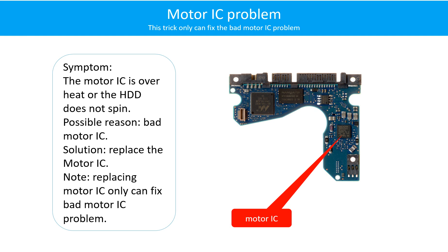Motor IC problem. Symptom: the motor IC is overheating or the hard drive does not spin. Possible reason: the motor IC is bad. Solution: replace the motor IC. Note: replacing the motor IC can only fix the bad motor IC problem. If the hard drive PCB has other problems or the hard drive itself has a problem, replacing the motor IC will not help.